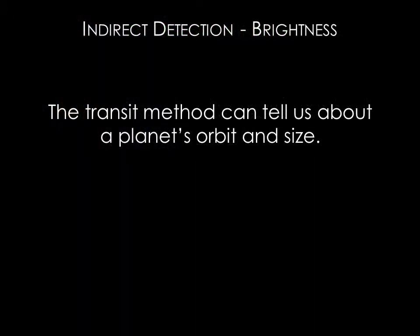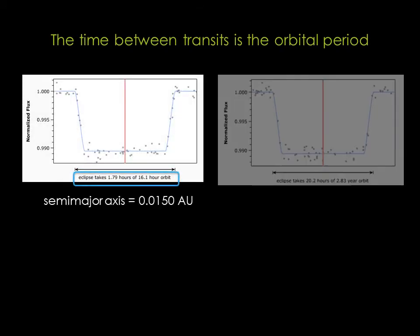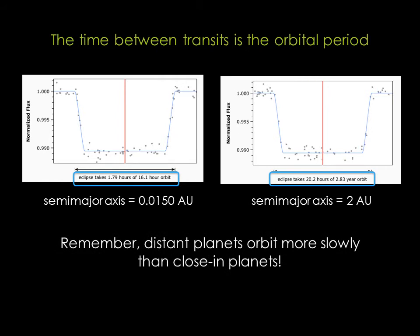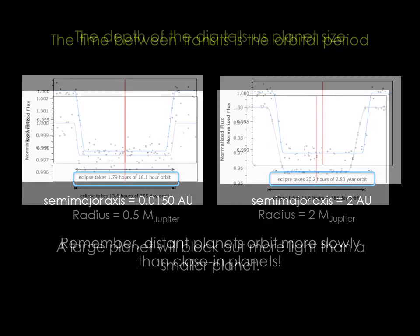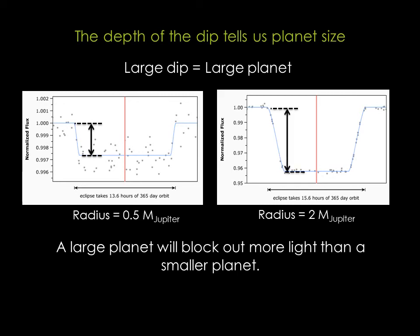We are able to determine details about a planet's orbit and its physical size using the transit method. The time between transits is the orbital period; the longer the orbital period, the more distant the planet is. The system on the left has a much shorter period than the system on the right, implying the planet on the left orbits much more closely — again, Kepler's third law: distant planets orbit more slowly than close-in planets. We can learn about the physical size of the planet by looking at how much light the planet blocks from the star — a smaller planet causes a small dip in brightness, while a larger planet causes a larger dip.